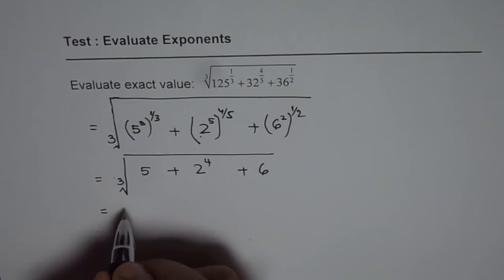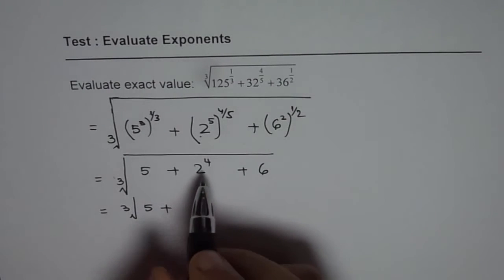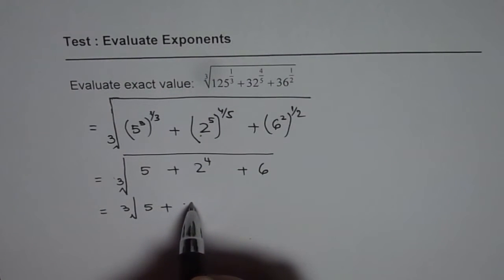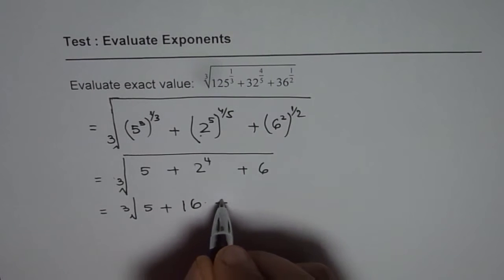So now we are having cube root of 5 plus 2 to the power of 4. That means 2 times 2 is 4, 4 times 2 is 8, 8 times 2 is 16. So I can write 16 here. 16 plus 6.